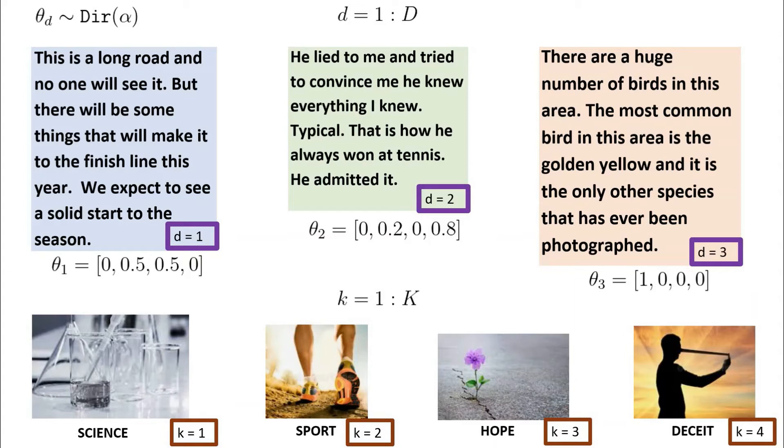Let's let beta_1 be the probability distribution over words for the first topic, science. We know intuitively that if our topic is science, then the probability of a word being argon is higher than ball and cry.